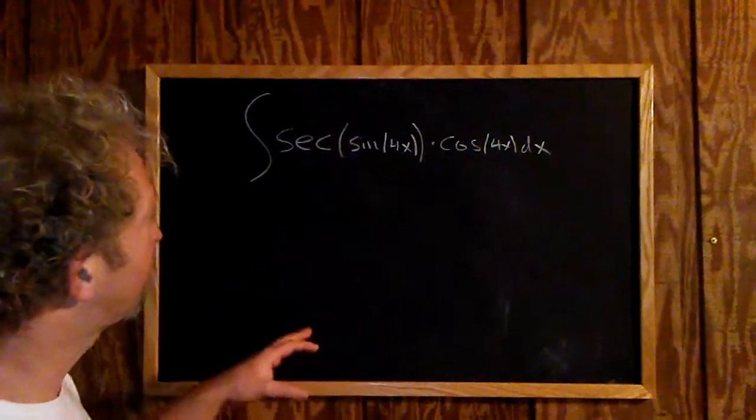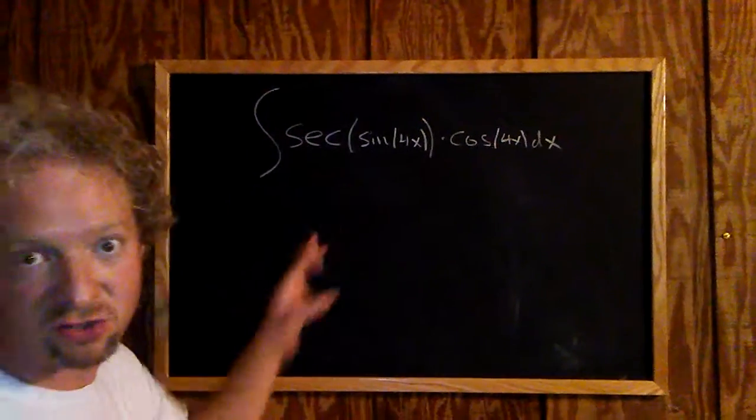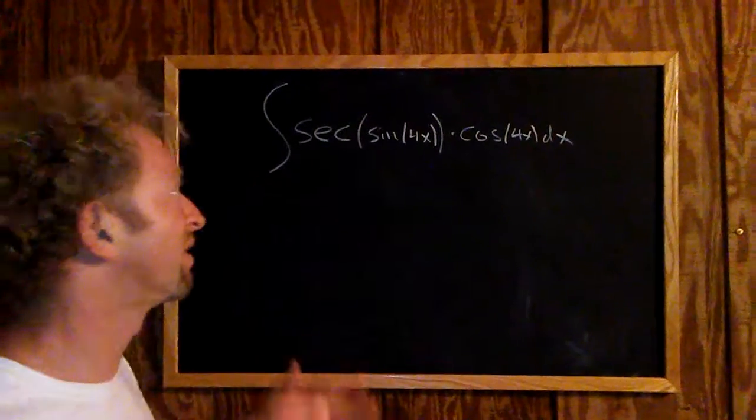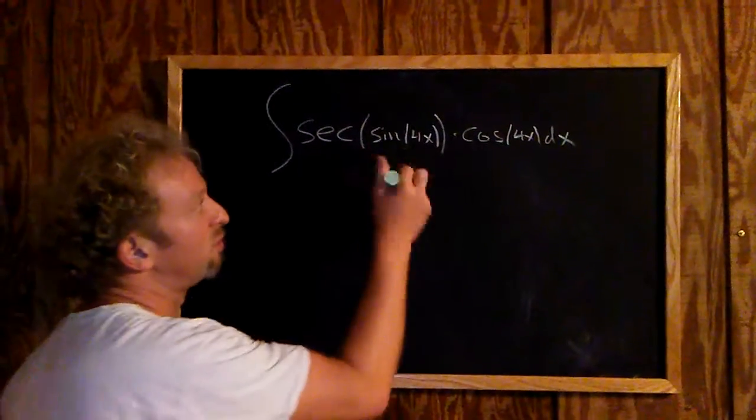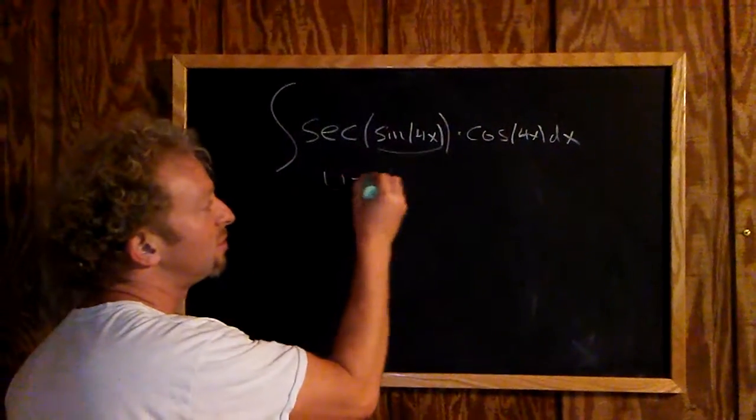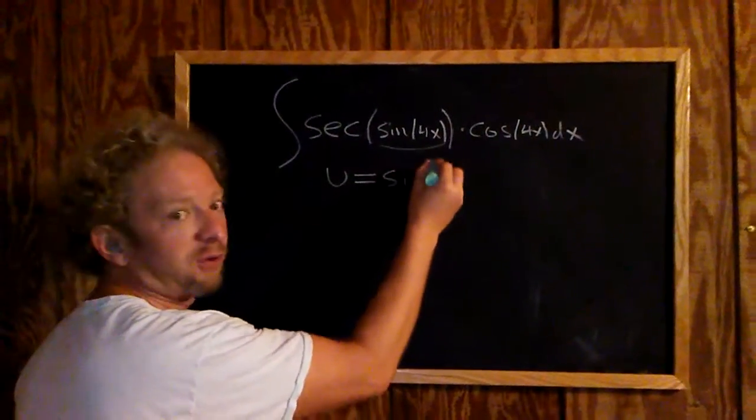The idea is to turn this into simply a secant function so we can use the formula for the integral of secant. We'll start by making a substitution. Let u equal sine of 4x.